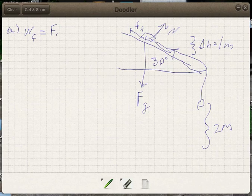And so this is going to be the force of friction times the length that it travels. So what's the force of friction? That's the coefficient of friction which is 0.6 times the normal force.